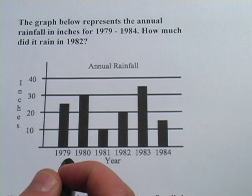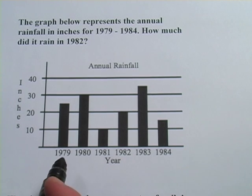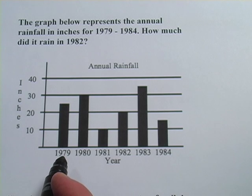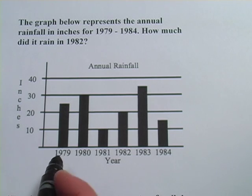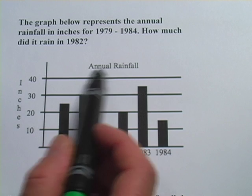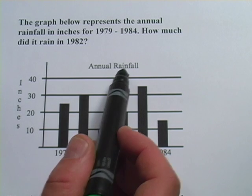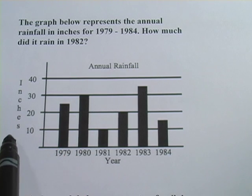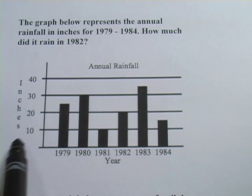This first one says the graph below represents the annual rainfall in inches for 1979–1984. How much did it rain in 1982? You can see the chart here — it says 'Annual Rainfall' at the top. On this side going down it says inches.